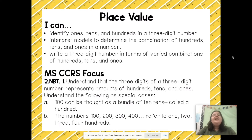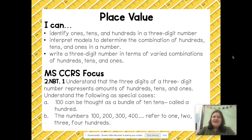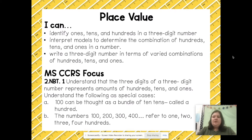The standard states: understand that the three digits of a three-digit number represent the amounts of hundreds, tens, and ones. Special cases include: (a) 100 can be thought of as a bundle of 10 tens, called a hundred; and (b) the numbers 100, 200, 300, 400, etc. refer to one, two, three, or four hundreds. Let's go ahead and get started.